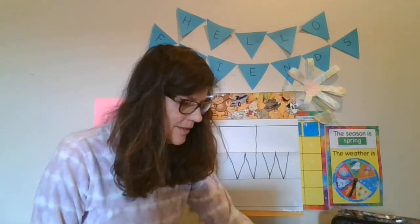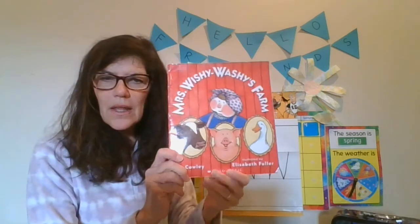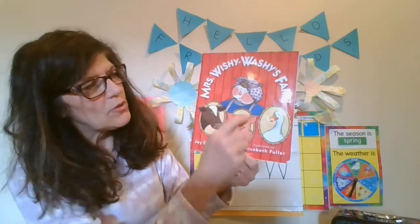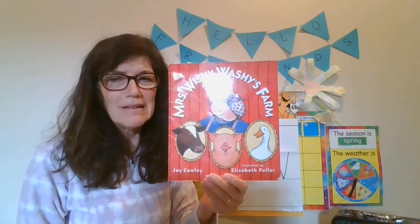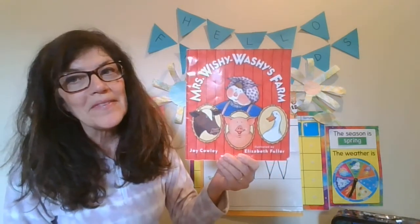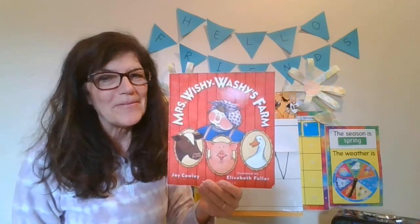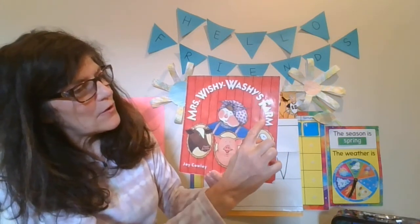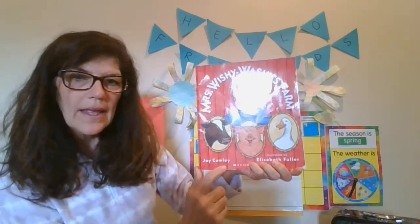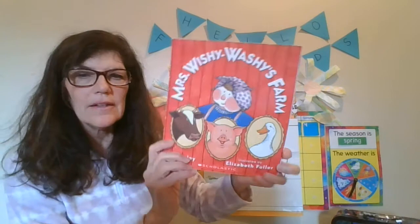The next thing I want to do is read you a story. This is a story about animals that live on the farm and Mrs. Wishy-Washy. She likes to give them a bath, and they don't like getting a bath, so they decide to run away. Let's find out what happens to them. The name of this book is Mrs. Wishy-Washy's Farm. The author is Joy Cowley and the illustrator is Elizabeth Fuller.